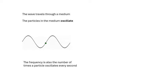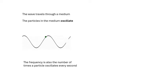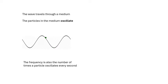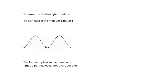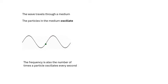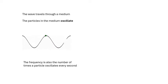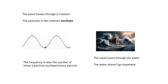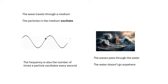Waves travel through a medium, and in that medium the particles oscillate — for water waves, the particles on the surface go up and down. Frequency is also the number of times a particle oscillates every second. High frequency means the particles go up and down very quickly. Importantly, the water doesn't travel from left to right — the wave is traveling through the water.